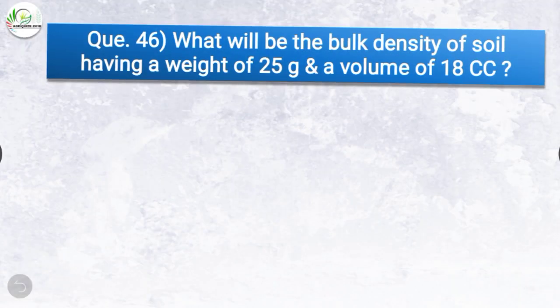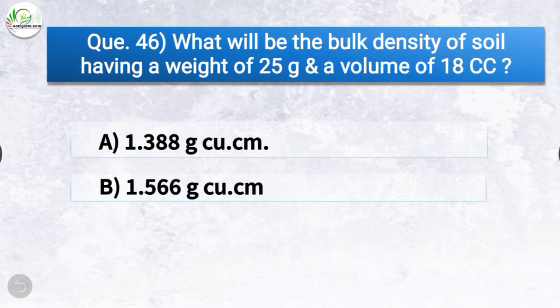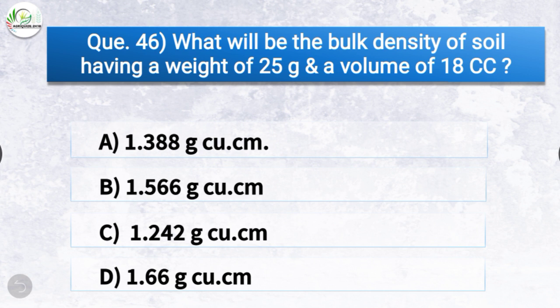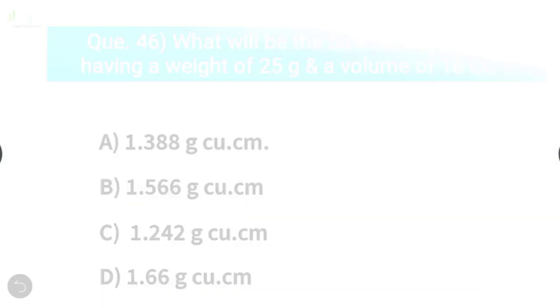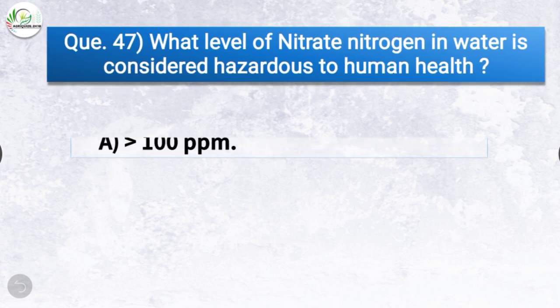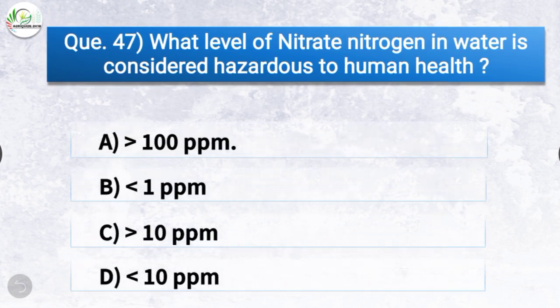Question number forty-six: what will be the bulk density of soil having a weight of 25 grams and a volume of 18 cc? The correct answer is option A, 1.388 g/cc. Question number forty-seven: what level of nitrate nitrogen in water is considered hazardous to human health? The correct answer is option A, greater than 100 ppm.